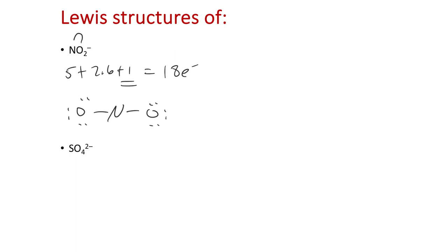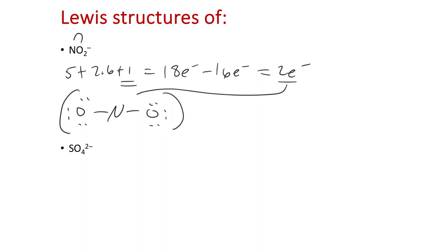Once you connect the two central atoms to give them their octet, then we count electrons. We've distributed 16 electrons, so there are two electrons that haven't been assigned to the Lewis structure. Those two electrons we place onto the central atom — that's how we know to put a lone pair of electrons onto nitrogen.